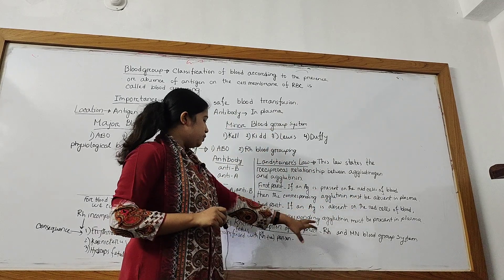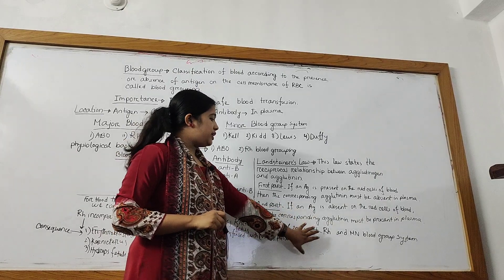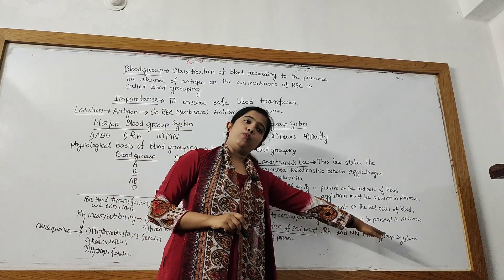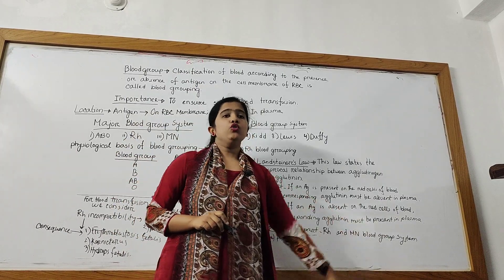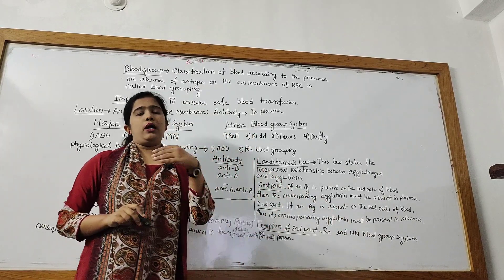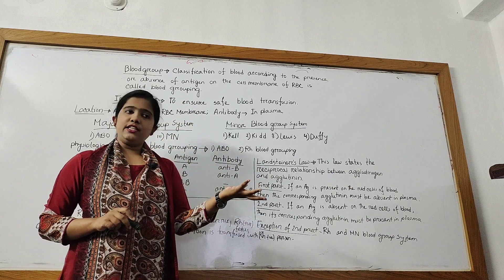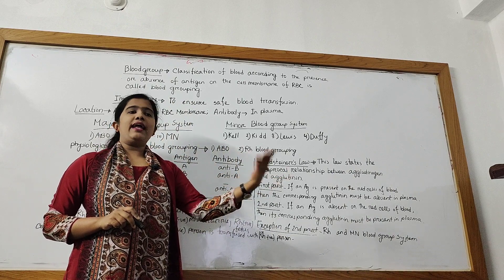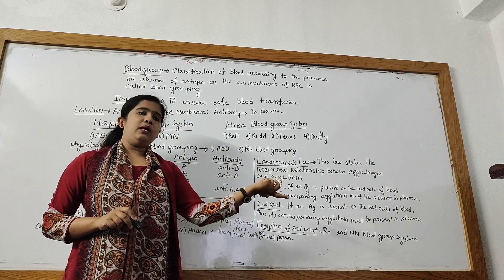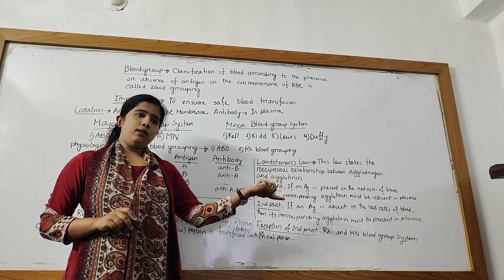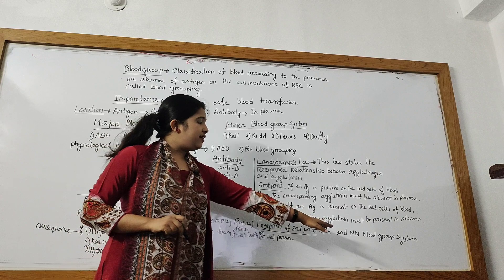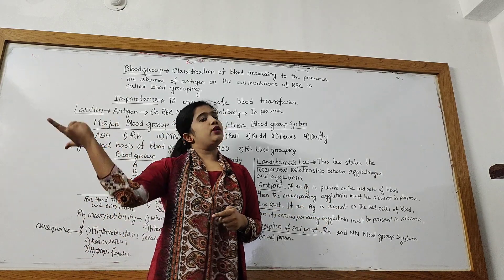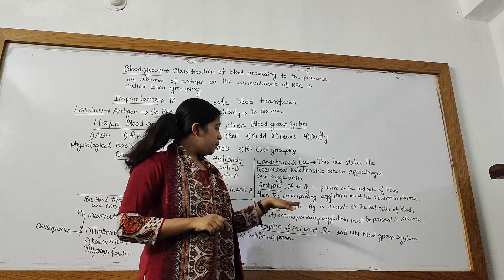This is the exception. Same with the MN blood group system — if you have no M antigen, according to the rule, you should have anti-M antibody; and if you have no N antigen, you should have anti-N antibody. But normally these antibodies are absent in MN blood group system, which is the exception to the rule.